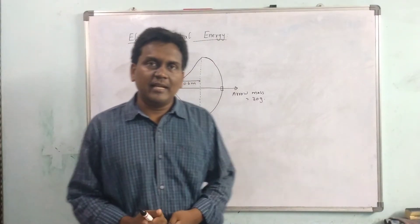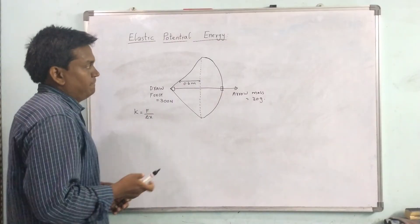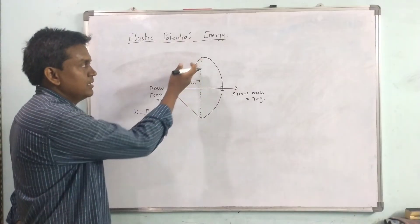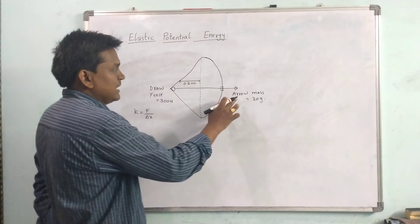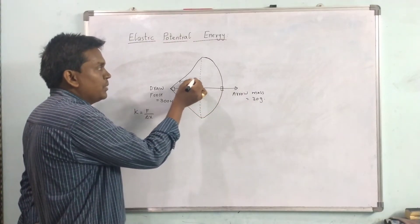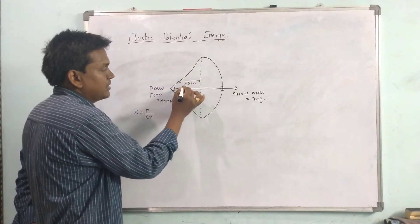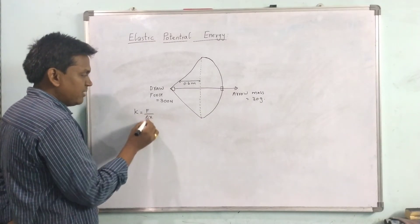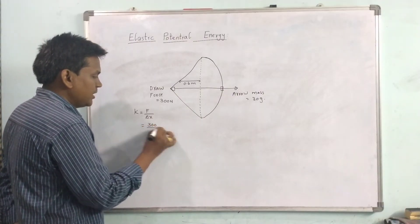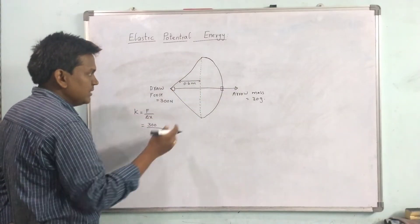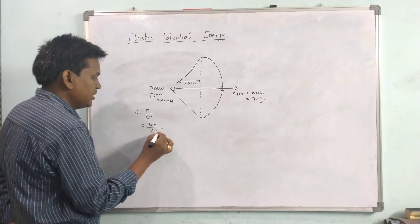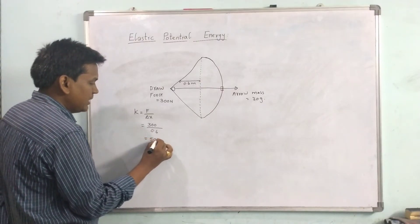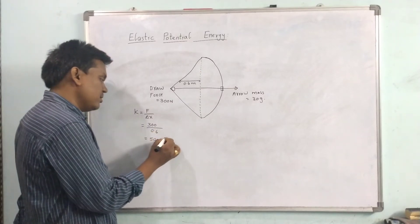Let us consider one example for elastic potential energy. A trained archer is drawing the bow with a force of 300 newton, and the arrow mass is 30 grams. The bow is stretched 0.6 meters. So the spring constant k equals F by delta x, that means 300 newton divided by 0.6, giving a spring constant of 500 newton per meter.